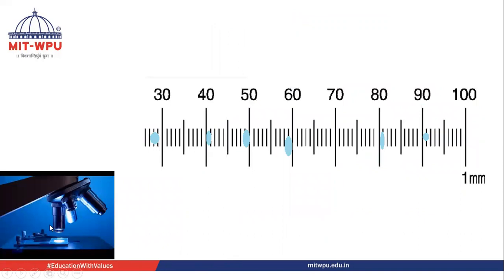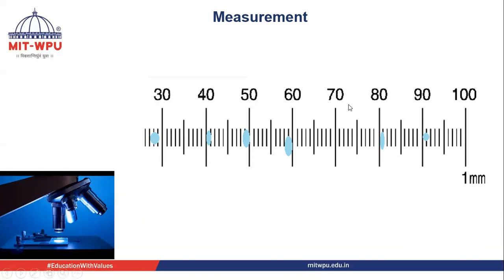Now I have removed the stage micrometer. Once calibration is done, remove the stage micrometer and place the prepared slide on the stage. We observe through the eyepiece micrometer. Now we can see only one scale since the stage micrometer has been removed and the prepared slide is in place. We can see the starch grains — blue in color — and the eyepiece micrometer scale. The scale can be moved as per direction or as per the position of the starch grains.